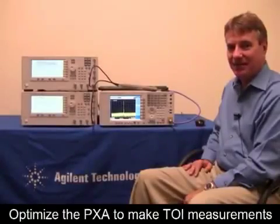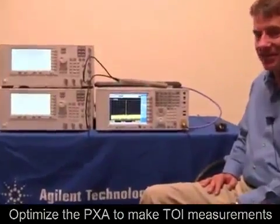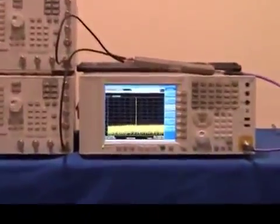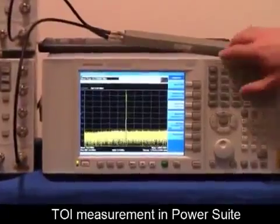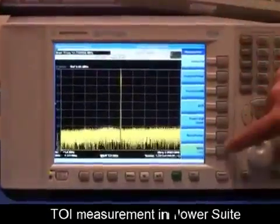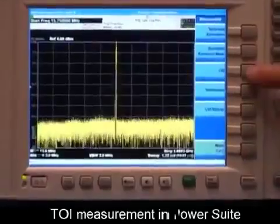So now I'm going to optimize the PXA to make TOI measurements. I'm going to use the TOI measurement within the analyzer's power suite. I'll do that by pressing MEJ, MORE, TOI.